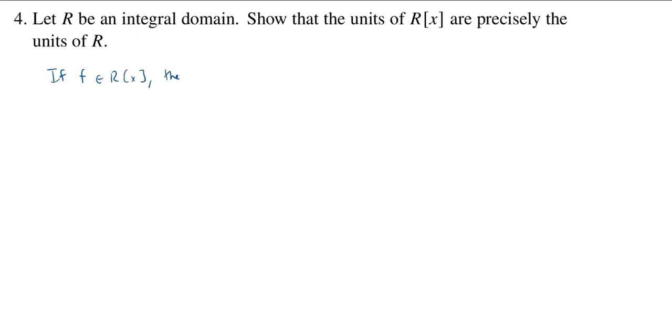Then f is a unit if there exists some polynomial g such that f times g is equal to 1, where here we think of 1 as either the constant polynomial 1 or even just as an element of r.